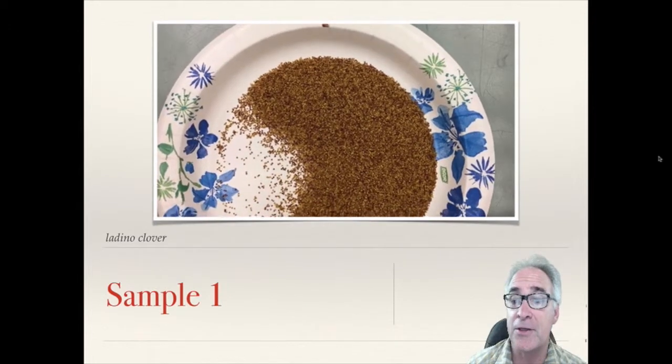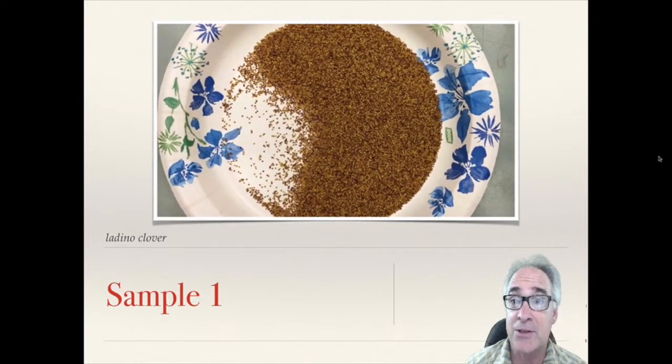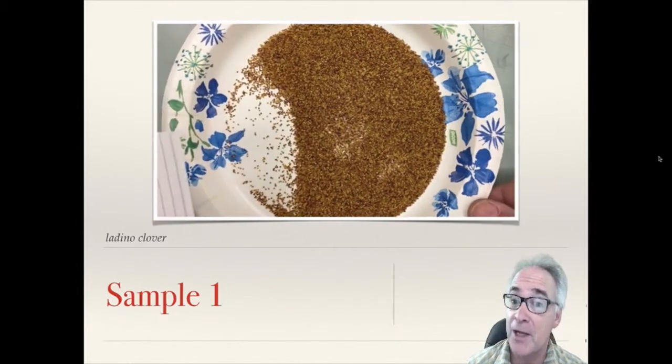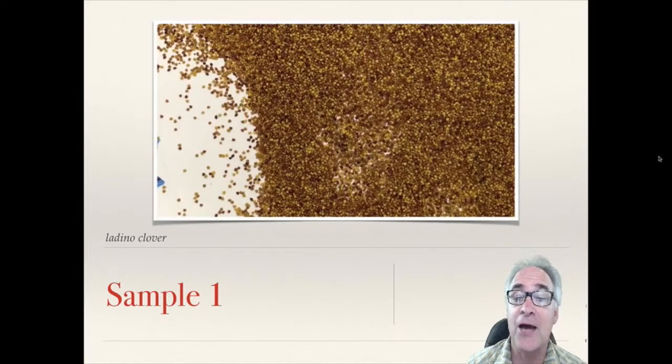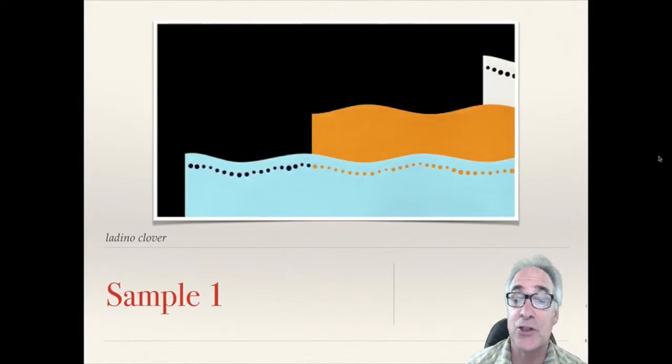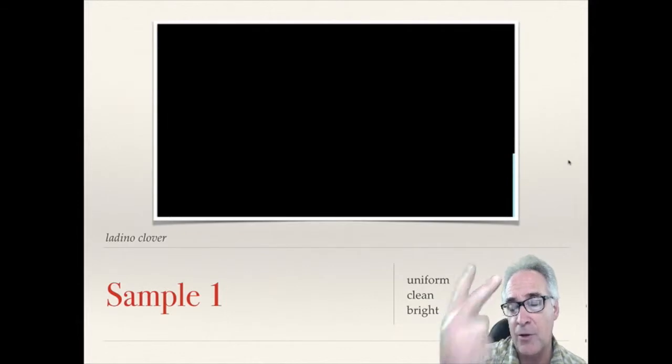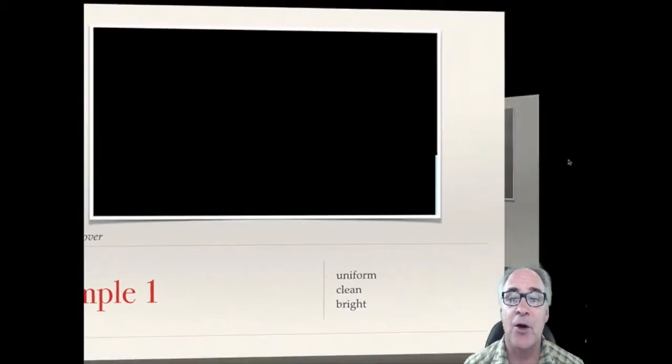One of the first things that should impress you about this particular seed is it's very bright, and what that means is it's relatively a new crop, so it's going to have a good germination rate. As we zoom in a little tighter, you'll see not only that, but the uniformity in its size is also real critical. We're looking at a clean seed, a uniform seed that's really bright, so this seed is going to do very well out in the field in terms of its germination rate.